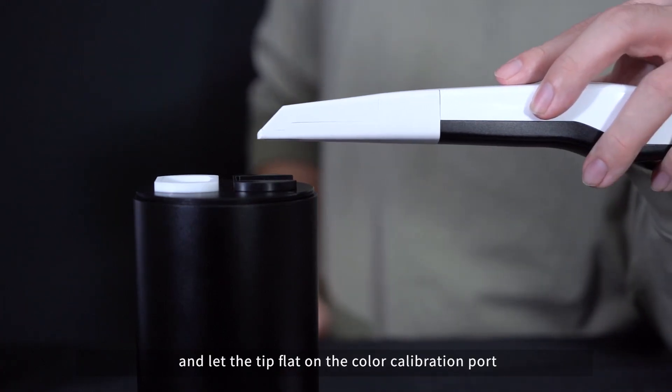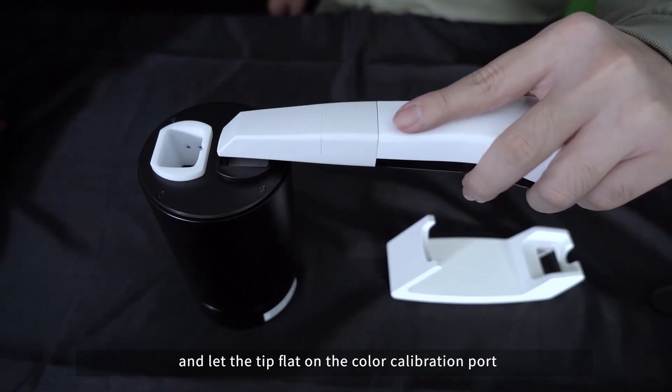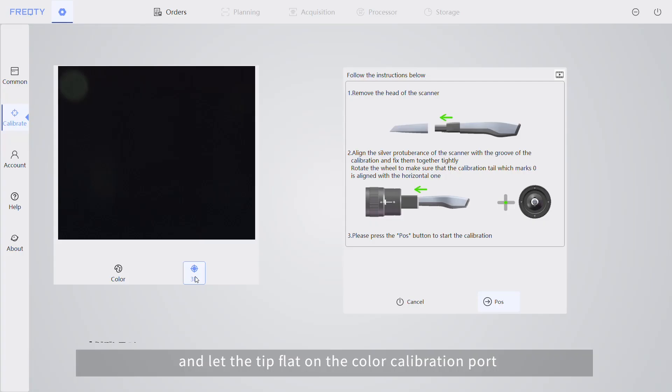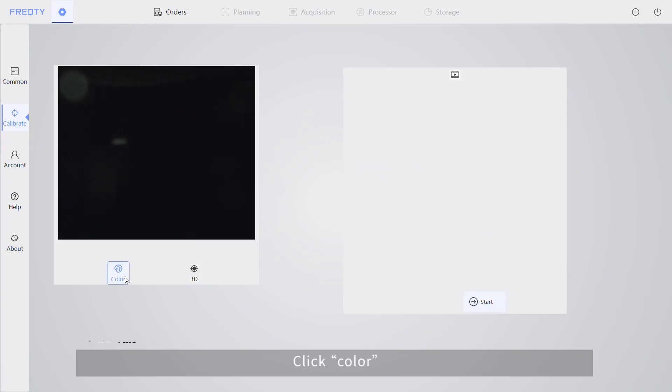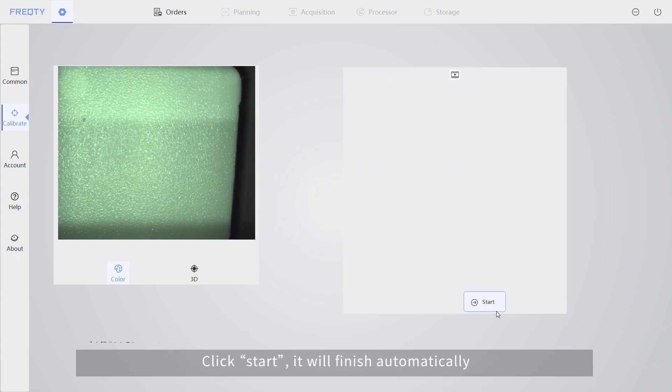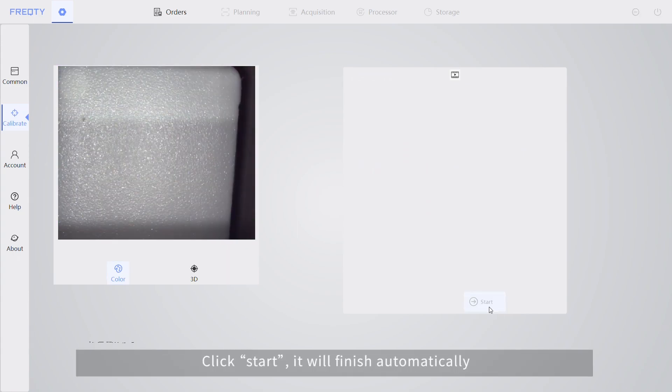Then insert the tape and let the tip flat on the color calibration port. Click color, then click start. It will finish automatically.